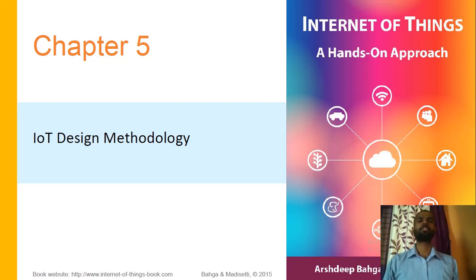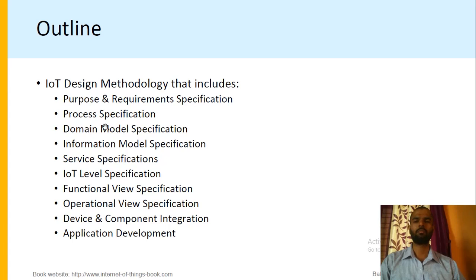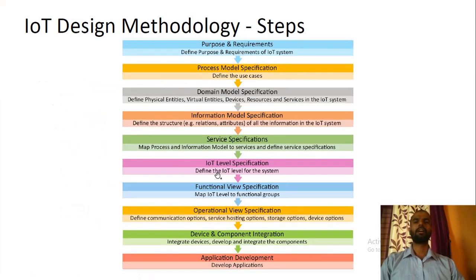Hello, today we are going to discuss our next unit that is IoT Design Methodology. In this unit we are going to discuss the IoT Design Methodology that includes Purpose and Requirement Specification, Process Specification, Domain Model Specification, Information Model Specification, Service Specification, IoT Level Specification, Functional View Specification, Operational View Specification, Device and Component Integration, and finally Application Development. These are the steps in IoT Design Methodology or IoT System Design.